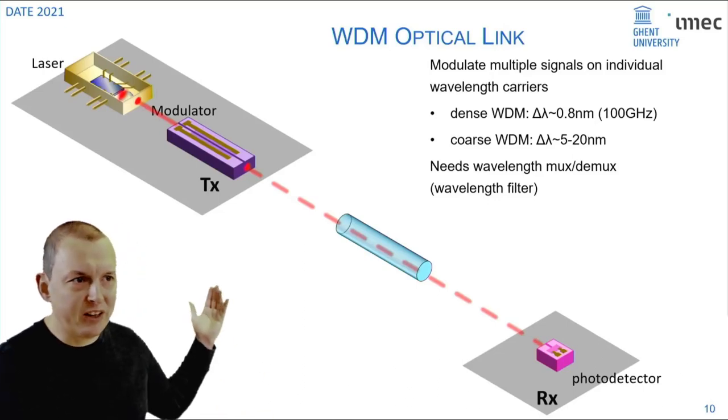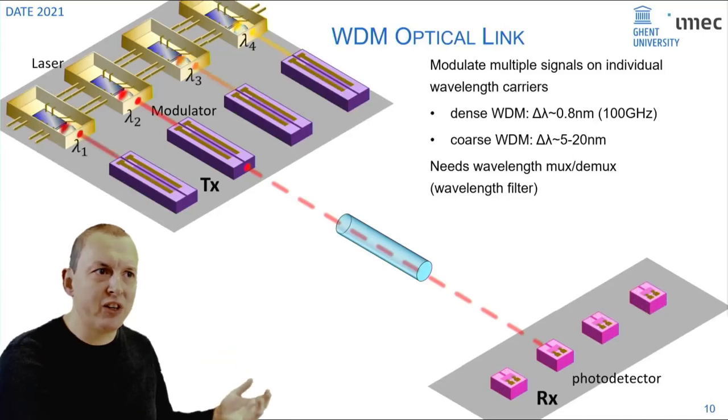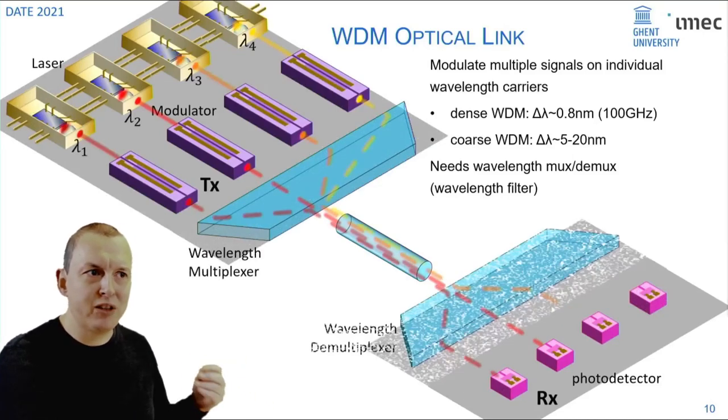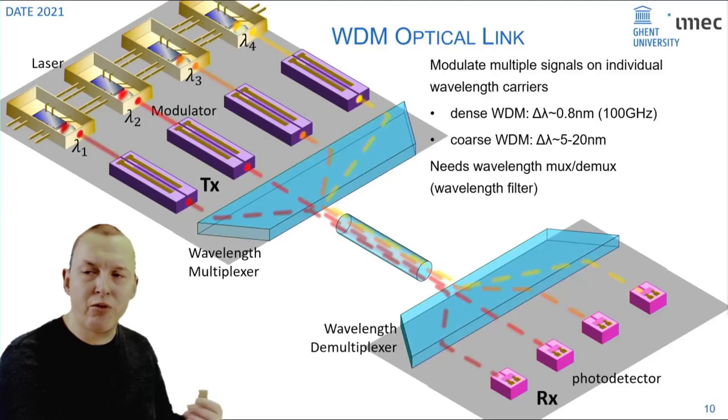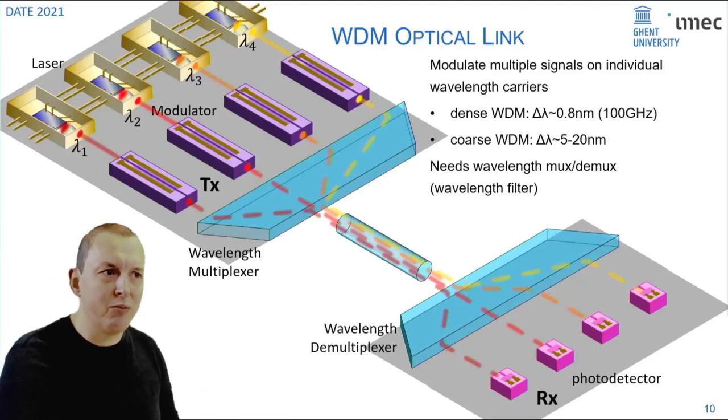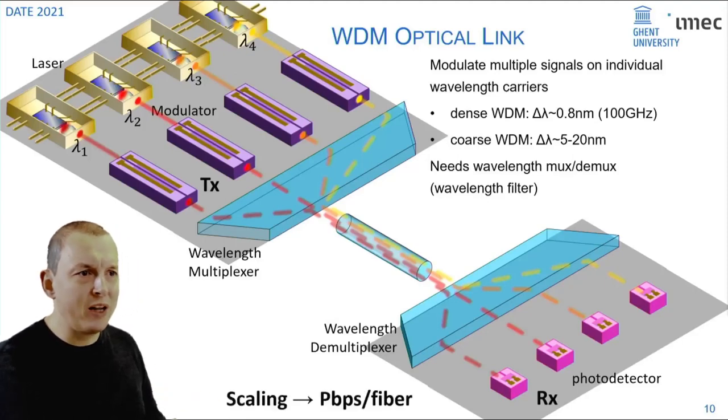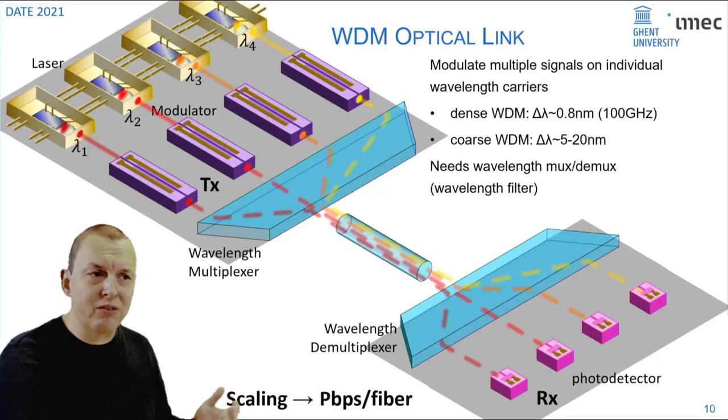And that brings us to what we call wavelength division multiplexing. Instead of a single link we just use a parallel link operating at different wavelengths which are then combined with a multiplexer into a single optical channel and unraveled at the receiving side with a demultiplexer and different photo detectors.